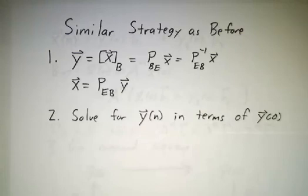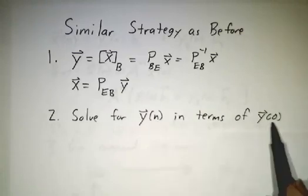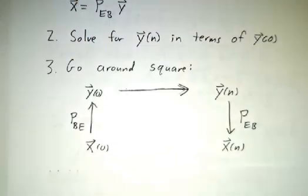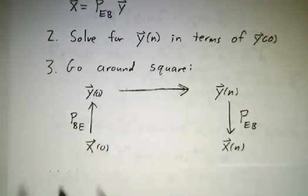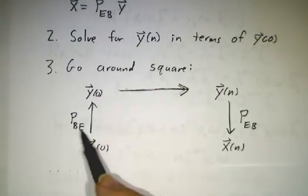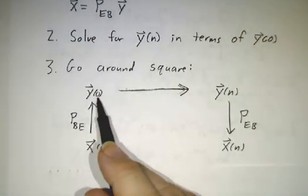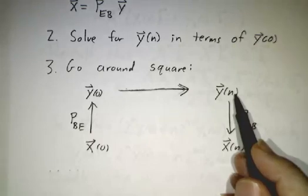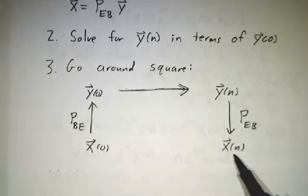Now we're going to solve for y at time n in terms of y at time 0. And we're going to go around our favorite square. We're going to start with x at time 0, ride the elevator, the change of basis matrix, to get y times 0. We're going to figure out what y is at time n, and we're going to convert that to x at time n.